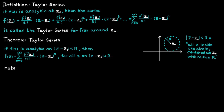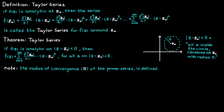From the fact that the function needs to be analytic on this disk, we can draw the conclusion that the radius of convergence r of a power series is defined as the distance from c naught to the closest singularity of the function.